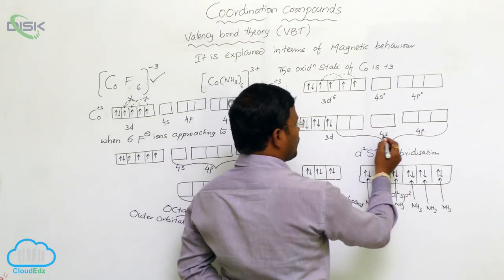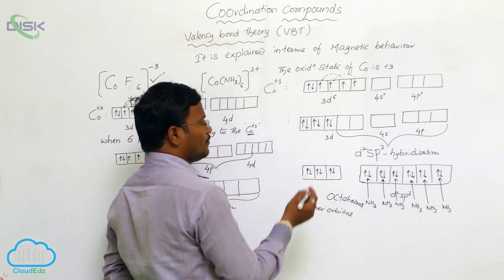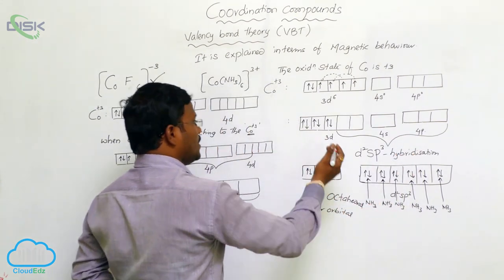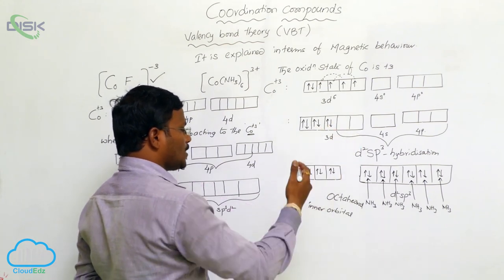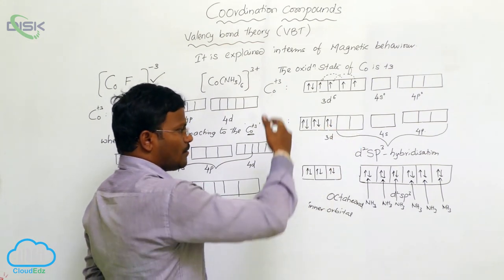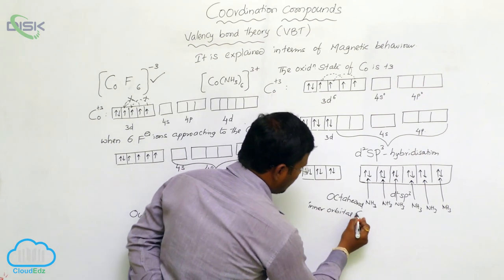s orbital, p orbital from fourth orbit, but d orbital is from third orbit. Hence, when compared to fourth orbit, third orbit present inside of the atom, hence inner orbital complex.